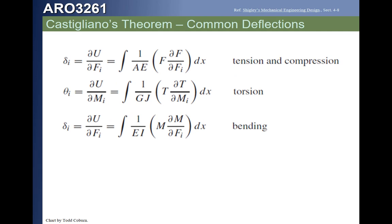So, we can take what we know about the energy, apply Castigliano's Theorem to it, and we get these equations for the translational and rotational deflections. The first equation is for axial load, the next one for torsion, and the next one for bending.